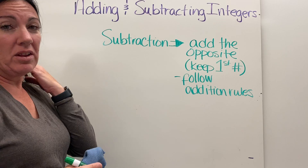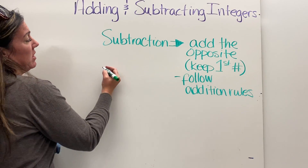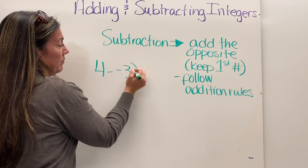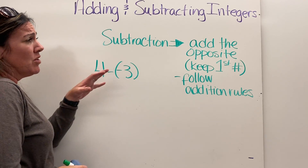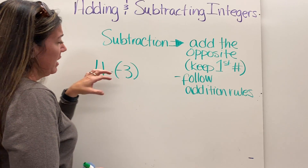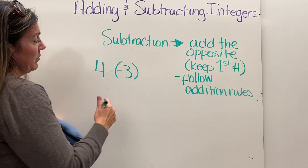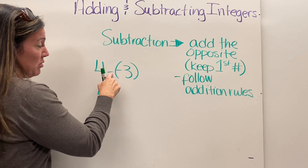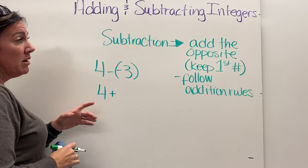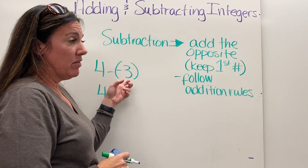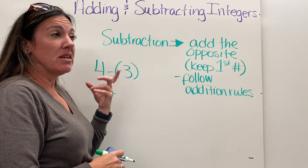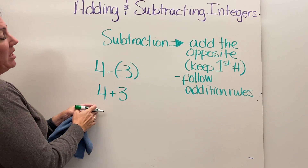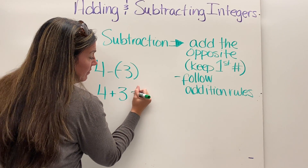Let's see what that looks like: four minus negative three. To add the opposite, I keep the first number the same — four — change subtraction to addition, then use the opposite of negative three, which is positive three. So it becomes four plus three, which equals seven.